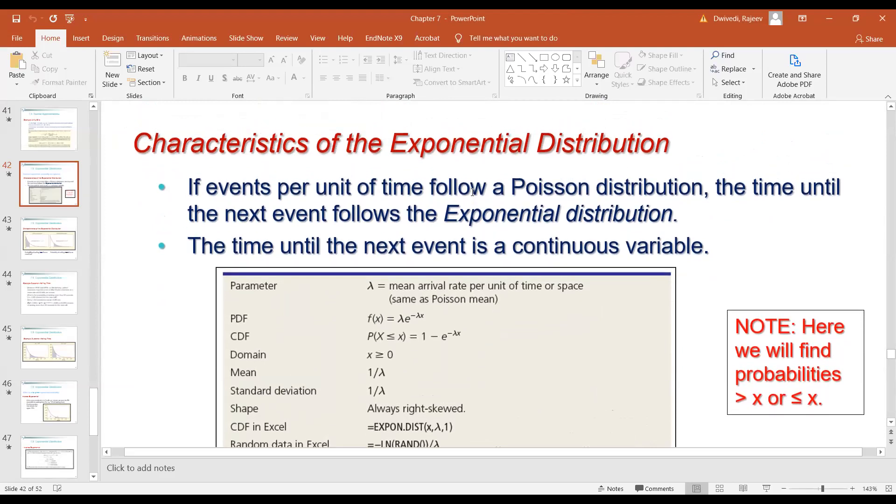Exponential distribution has lambda. If events per unit of time follow Poisson distribution, the time until the next event follows the exponential distribution. This is the must condition everyone has to remember.